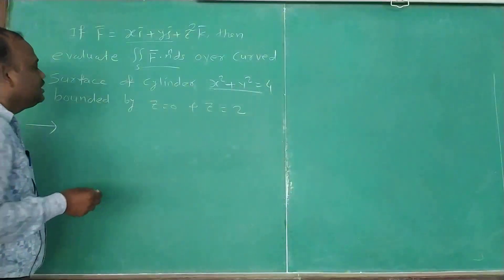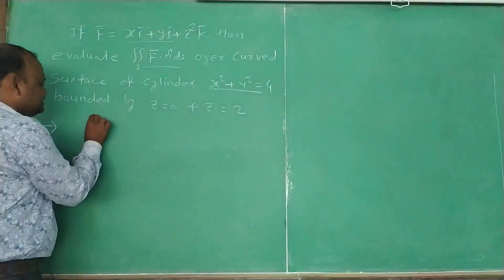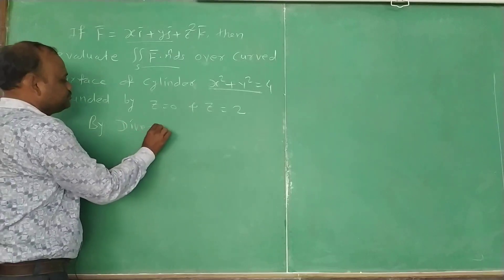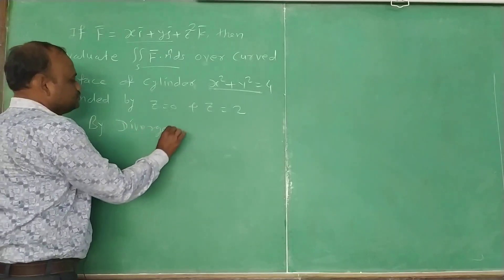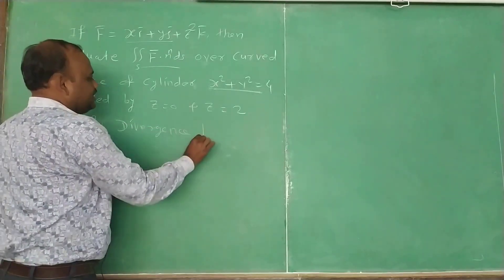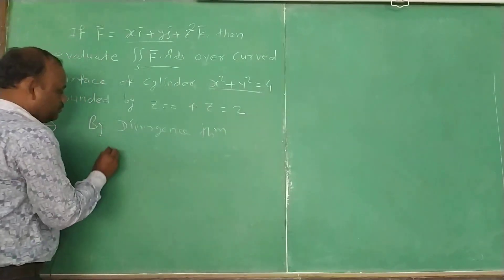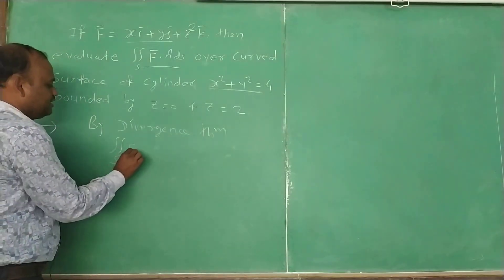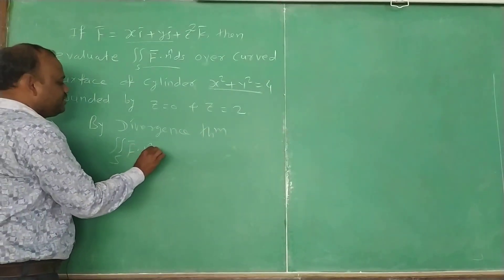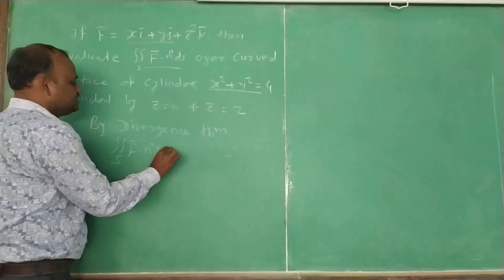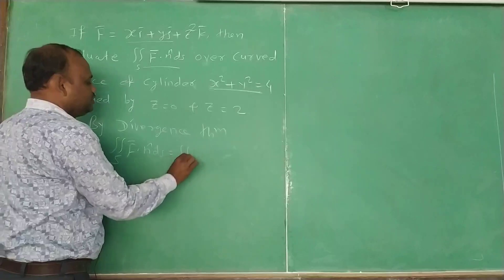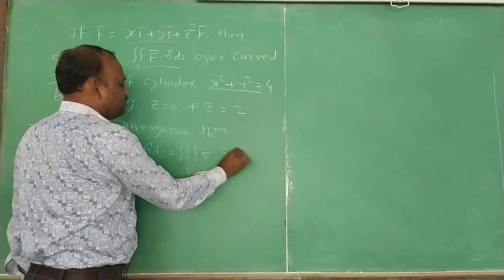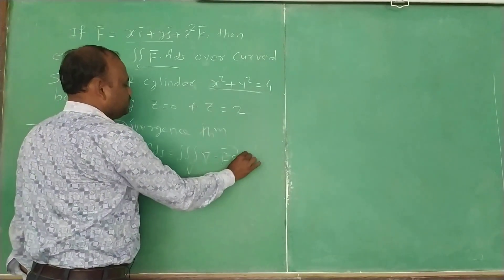For this, first we have to use the divergence theorem. By divergence theorem, we know that the double integral over S of f̄·n̂ dS is equal to the triple integral over volume V of ∇·f̄ dV.